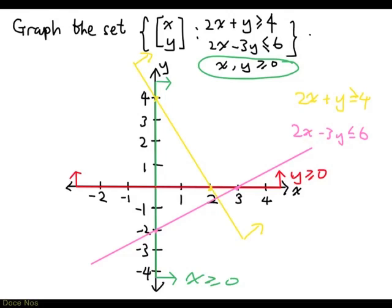Well, 2 times 0 is 0, minus 3 times 0 is 0. So 0 is less than 6. So that means the origin is a point on the side defined by 2x minus 3y less than 6. So everything that is on the same side as the origin with respect to this line will satisfy this inequality.